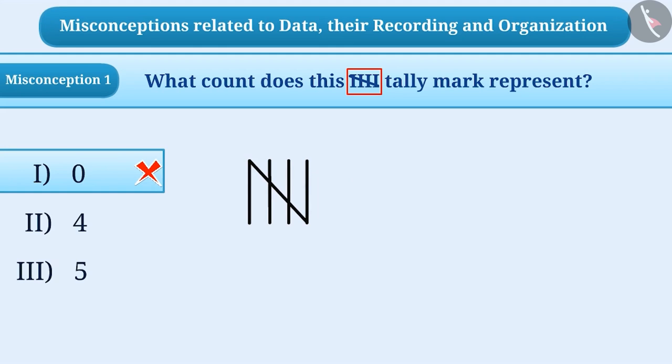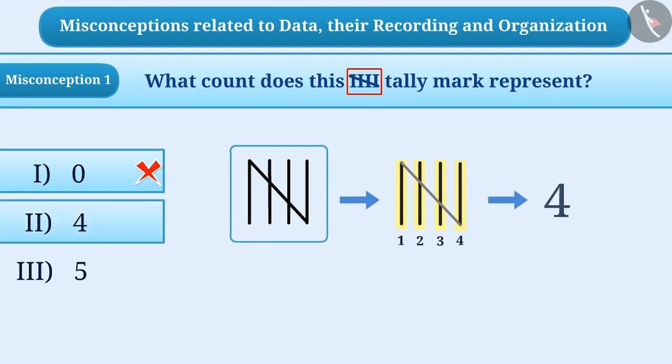Similarly, some children have the understanding that only the straight lines are to be counted in the tally mark and not to count the slant line. Therefore, they only count straight lines and do not count the slanting line. As there are four straight lines in the tally mark as shown, and there is a slant line on the lines, so they count this sign as four. That is, they choose the second option, and this is also the wrong answer.